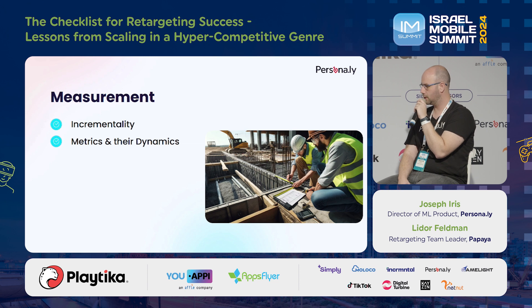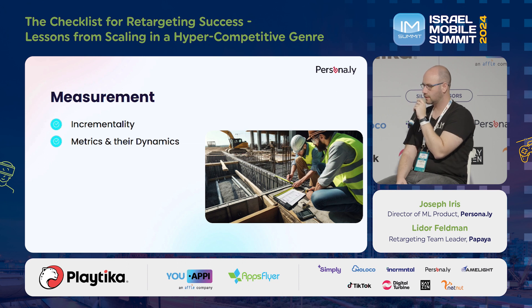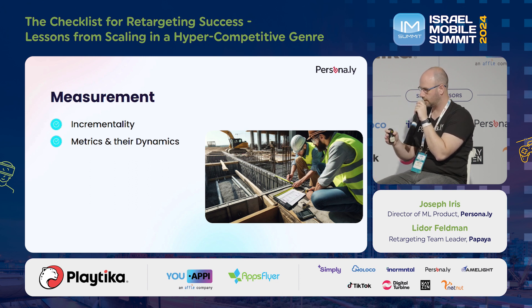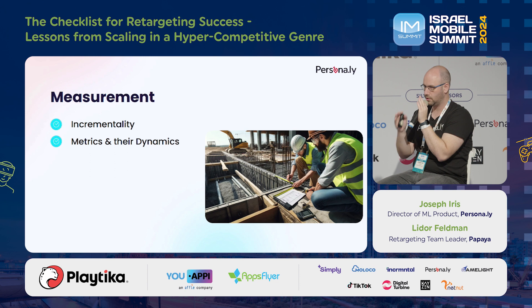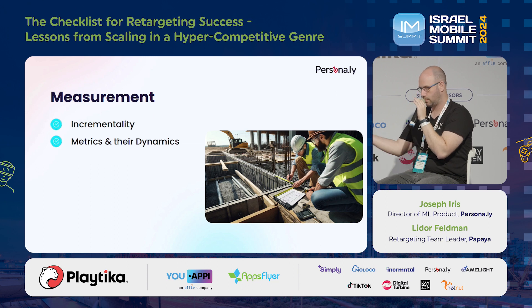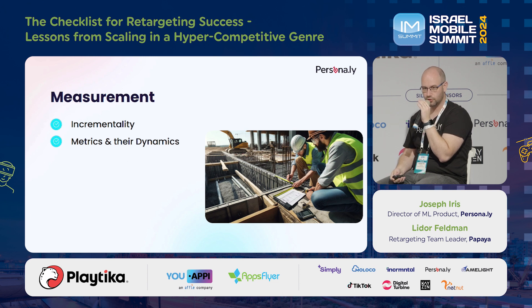Don't neglect incrementality testing. If you're considering starting retargeting, you have something to work with — which means you likely have an extensive UA activity, and you want to make sure you're not measuring their performance with your retargeting campaign. In the incrementality test, you have a control group you're not touching, and you measure them versus the ones you do touch. You need support from your BI team or your DSP — some partners don't have this, so we suggest starting with a test like this just to see what you'll get.